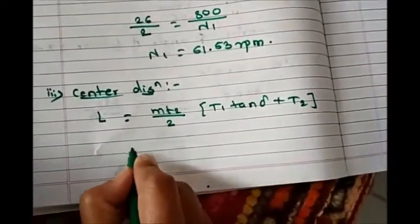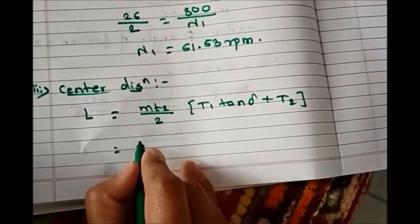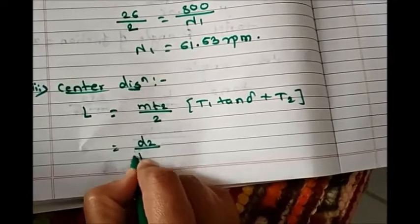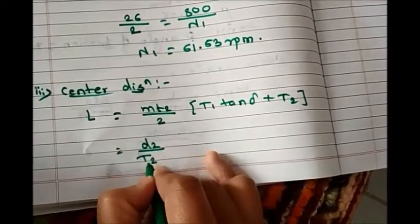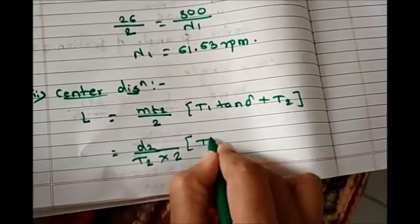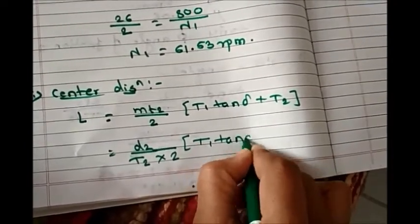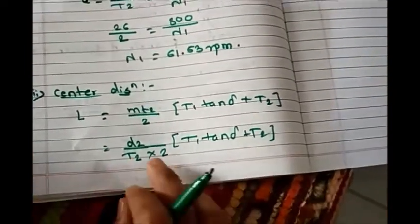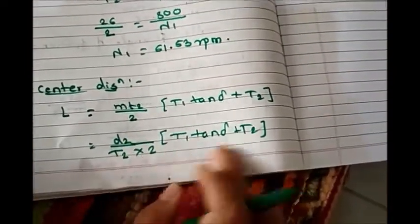Now instead of mt2, let's put the formula in terms of diameter and number of teeth. So it is d2 by t2 into 2, inside the bracket t1 tan of delta plus t2. We have all the values for this unknown, so let's put the value and get the answer for center distance.